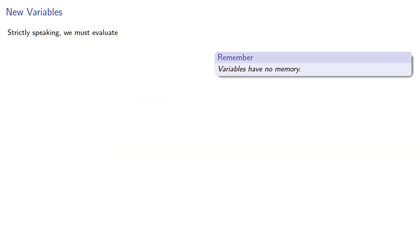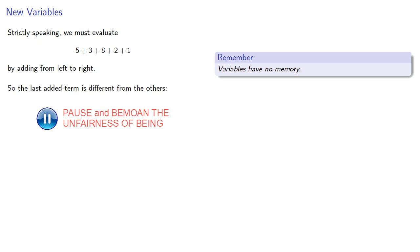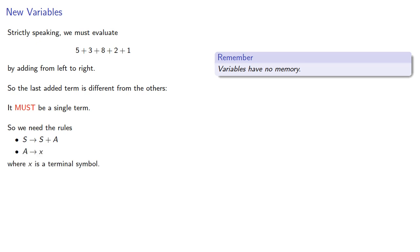But, strictly speaking, we must evaluate this expression by adding from left to right. So the last added term is in some sense different from the others. It must be a single term. So, we need the rule S produces S plus new variable A, where A is a different type of thing. In particular, A can only produce X, some terminal symbol.